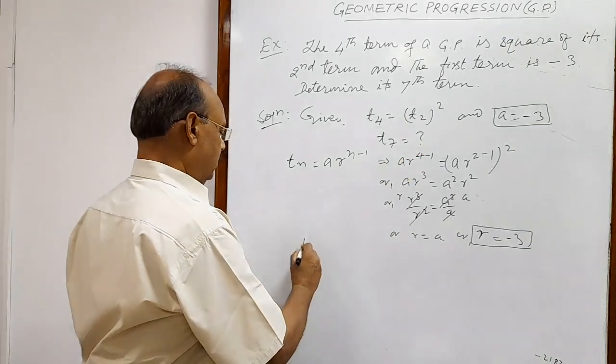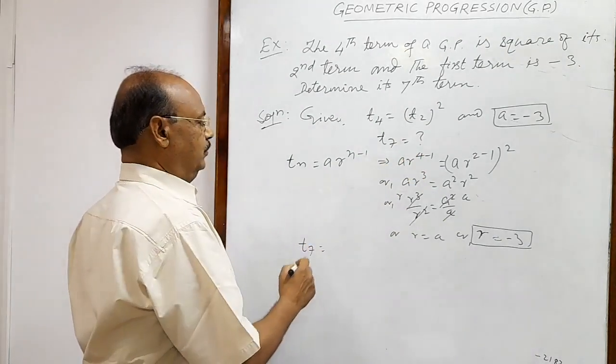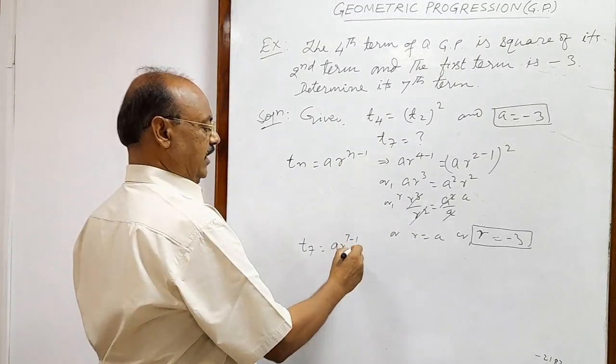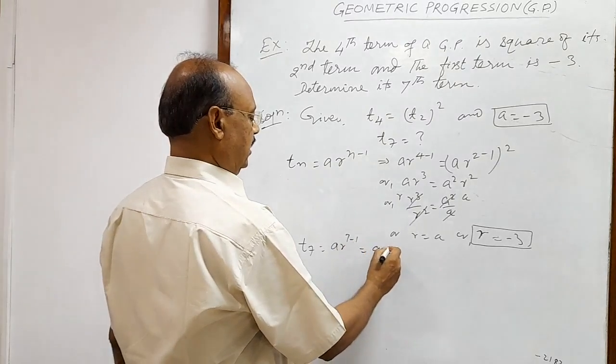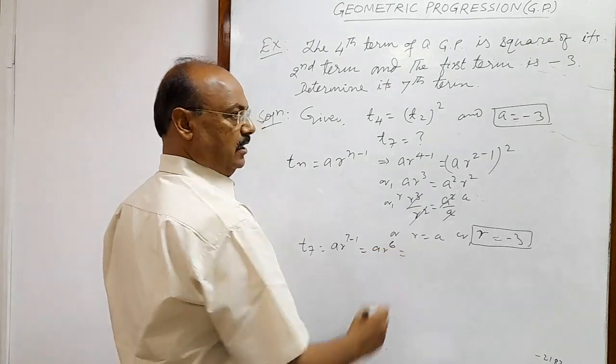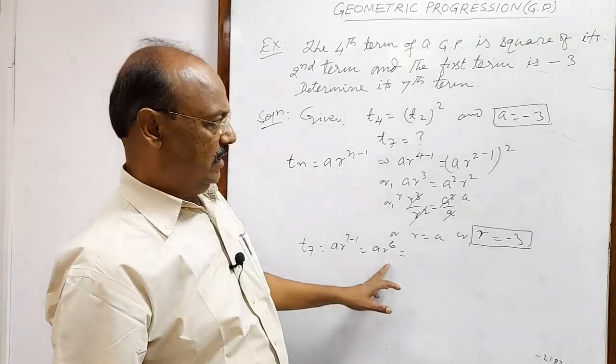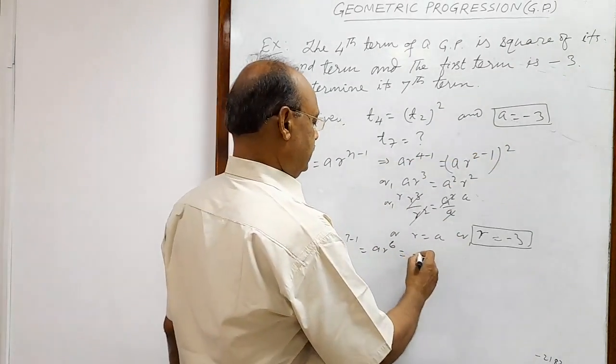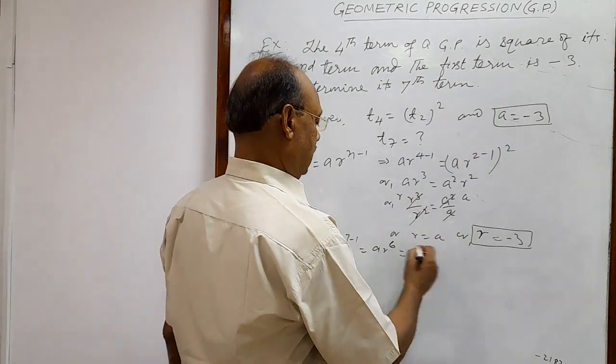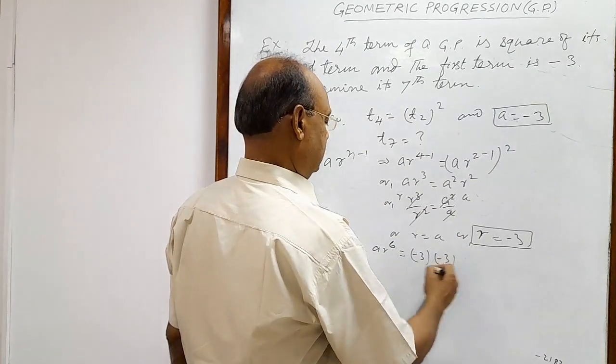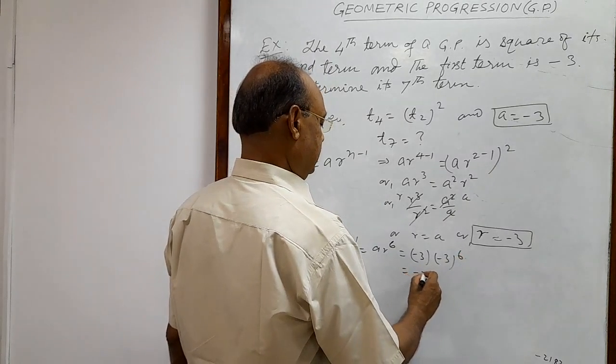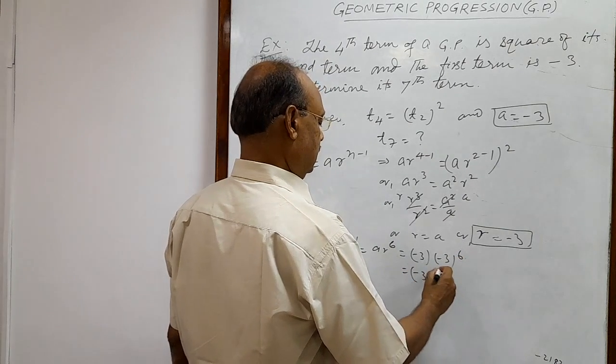So T7 is equal to, by this formula, A R to the power 7 minus 1, means A R to the power 6. Here we are having values of A and R, both are equal to minus 3. So A is minus 3 and R is minus 3 to the power 6, and this is equal to minus 3 to the power 7.